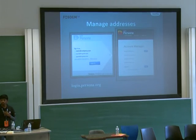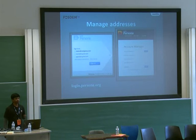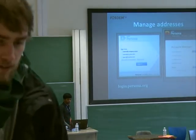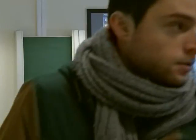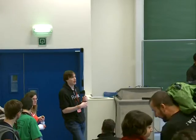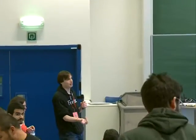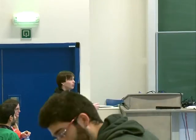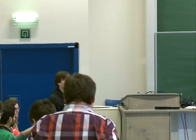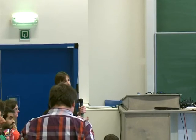To repeat the question: since identity providers are bound to the domain of the email address, and we just showed logging in with Gmail — does Google support Persona? The answer is it does not directly, but the Persona team has built bridges that use the Google OAuth API to act as an identity provider. You're really logging into gmail.login.persona.org, and it uses Gmail APIs. This works for Yahoo and Gmail today.